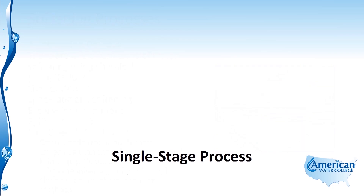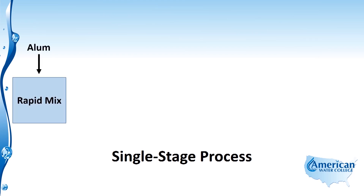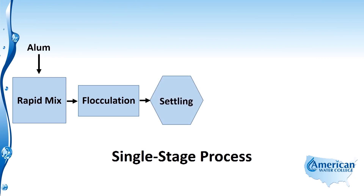The most common method is the single stage process, which is very similar to a conventional treatment plant. It starts with a coagulant — in this case alum — added to the rapid mix tank. The water then moves on to the flocculation chamber, and from there into the settling basin.